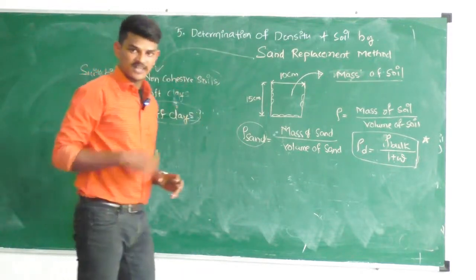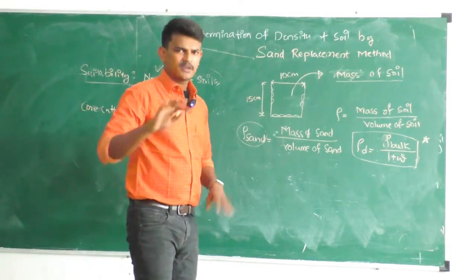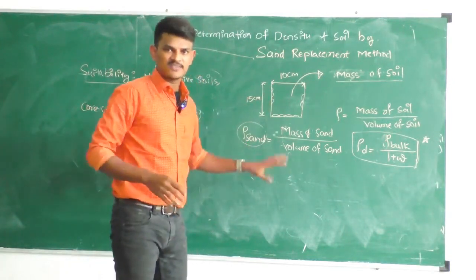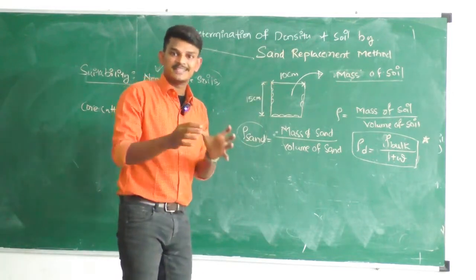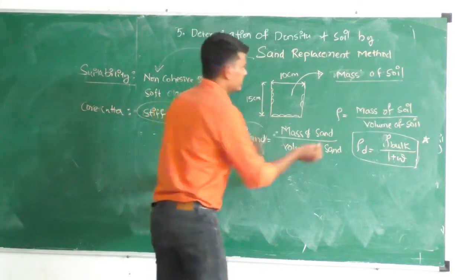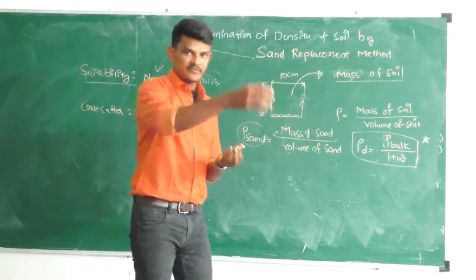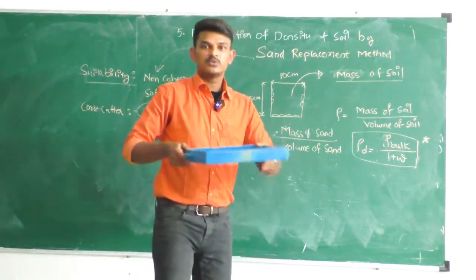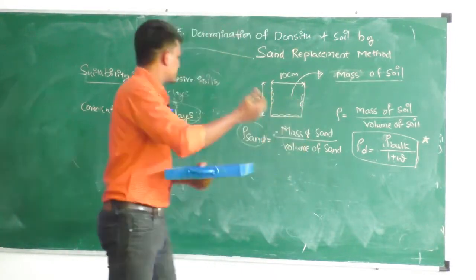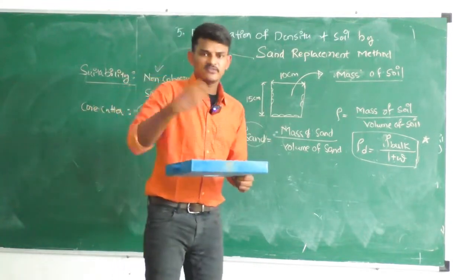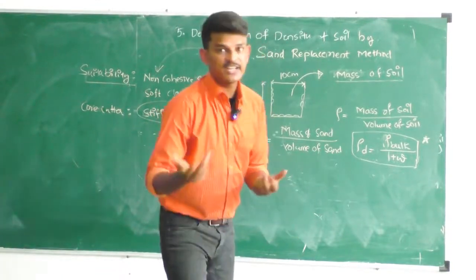The sand replacement method is suitable for non-cohesive soils or soft clays. Density is mass divided by volume. We go to the field, use a metal tray to dig out the soil. Since it is soft soil or soft clay, it is very convenient to dig using any digging instrument.